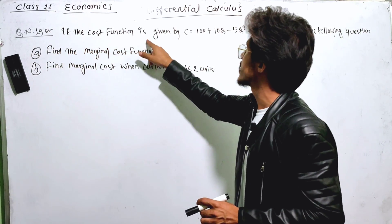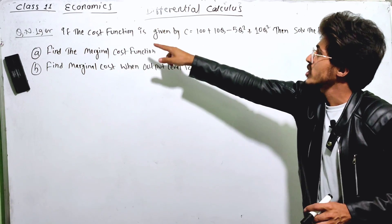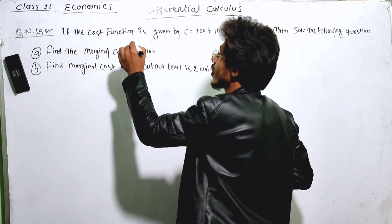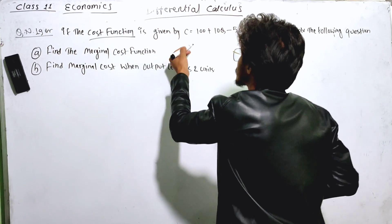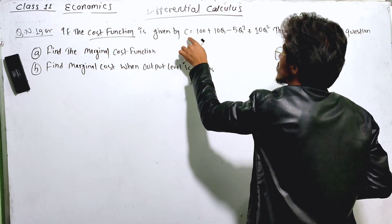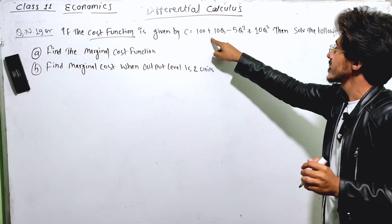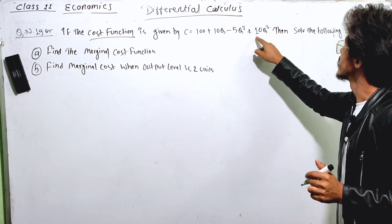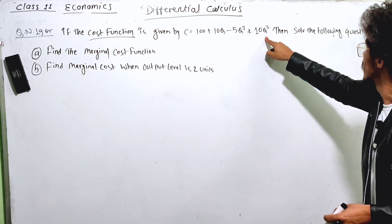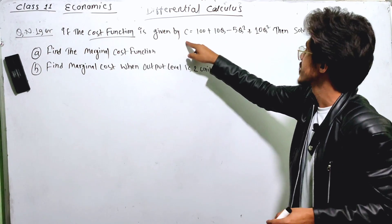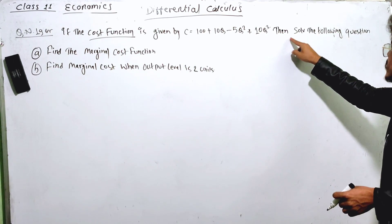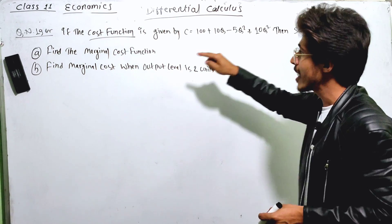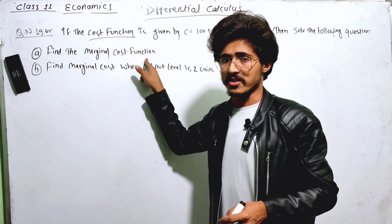If the cost function is given by C equal to 100 plus 10Q minus 5Q squared plus 10Q cubed, and output is given, then solve the following questions.